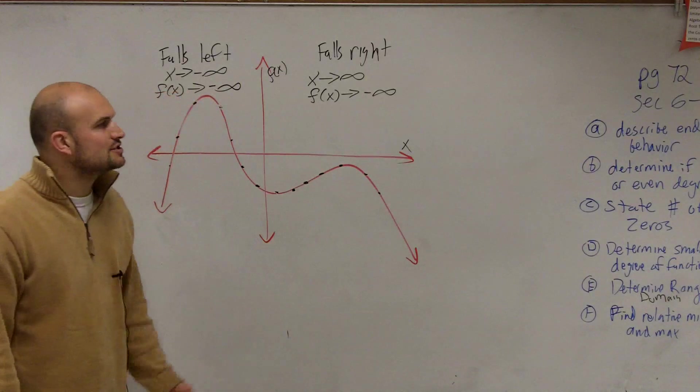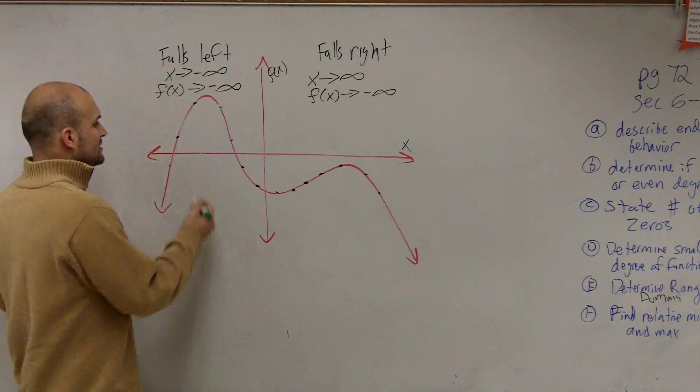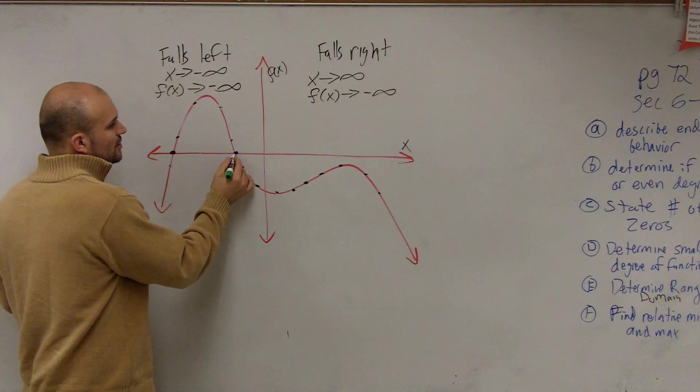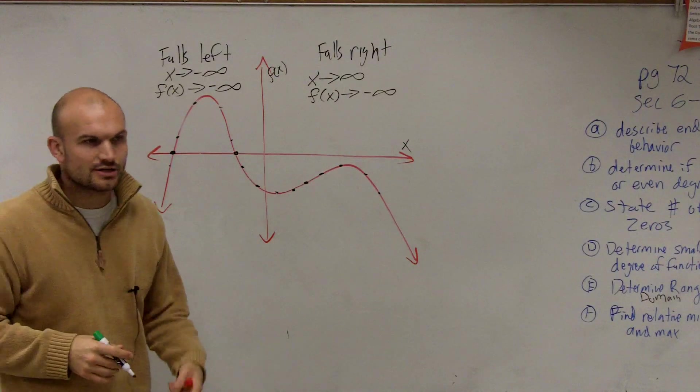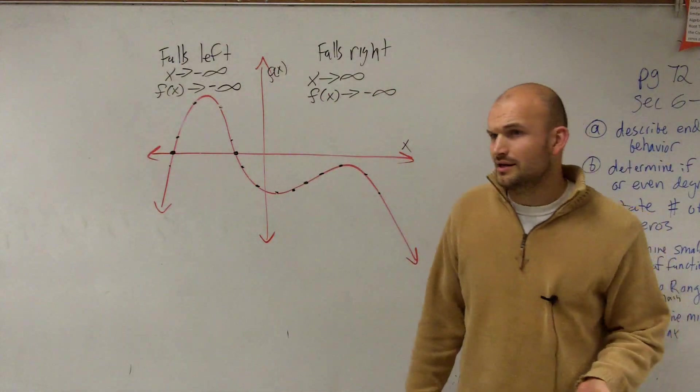For letter B, it says determine if it's an odd or an even degree. So to do that, all we simply did is determine the number of zeros that we had, or what we called our x-intercepts of the graph. Now, remember the definition last class period, what we talked about.